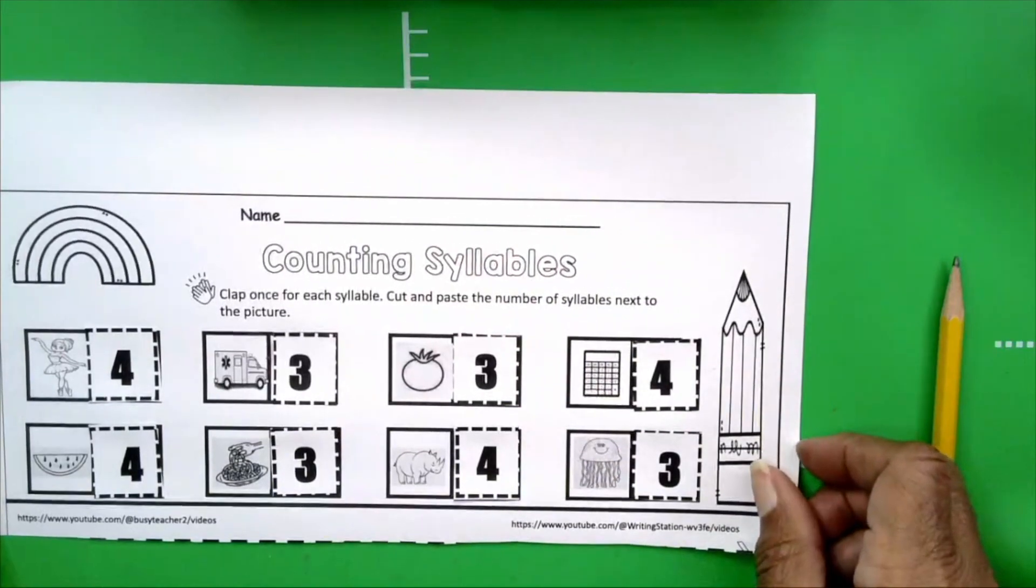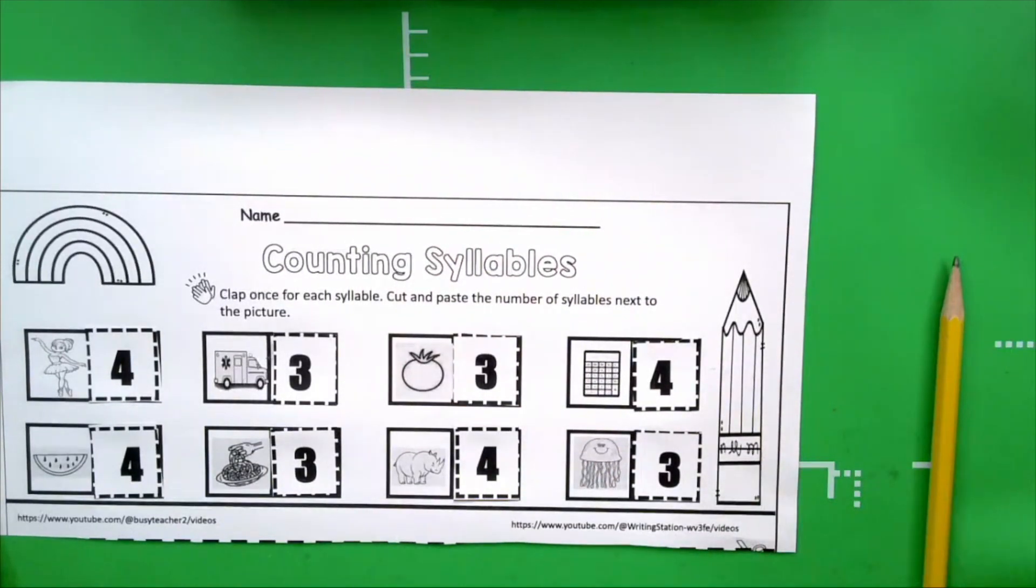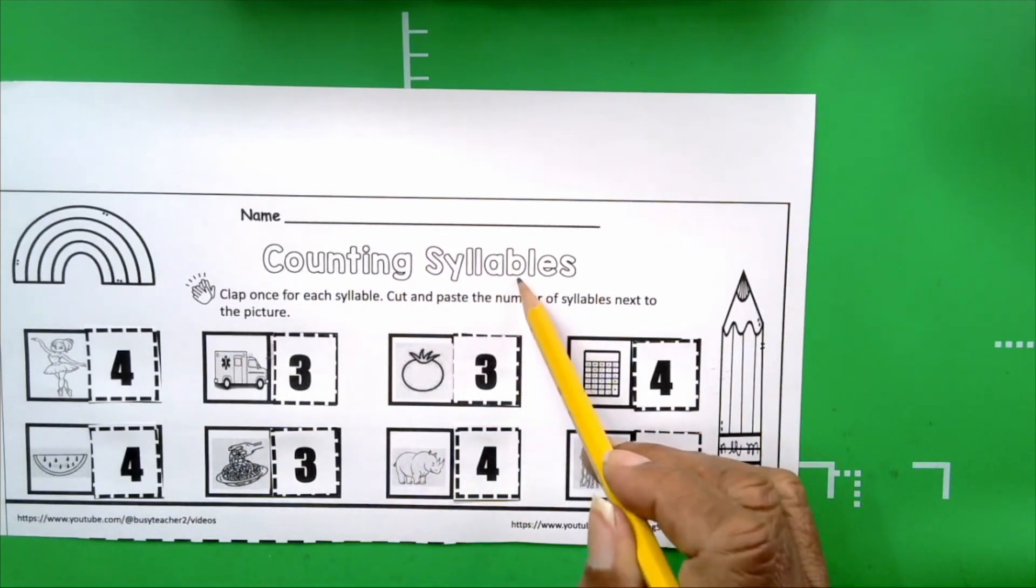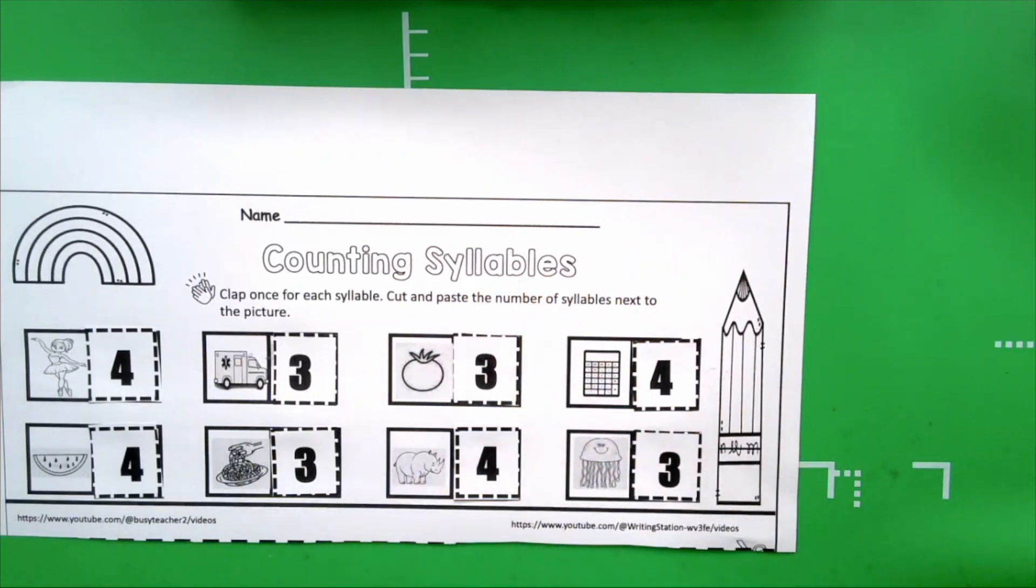Just to review what we've done so far and what we've learned, we've learned that if you clap your hands as you say a word, you can clap the syllables. You can find out how many syllables are in that word. We clap once for each syllable, then we cut and pasted the number next to the picture.